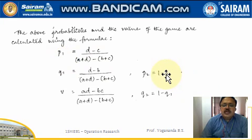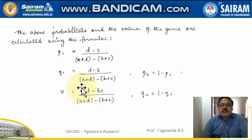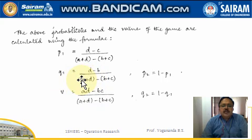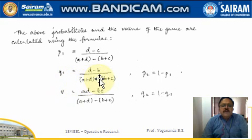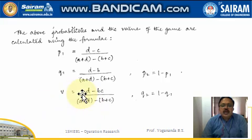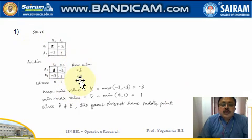To summarize: p is the probability that player A goes for his first strategy, and 1 minus p is the probability for his second strategy. q is the probability that player B chooses column one, and 1 minus q is the probability he chooses column two. The value of the game v is calculated using the formula shown here.